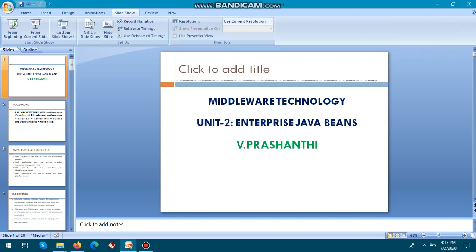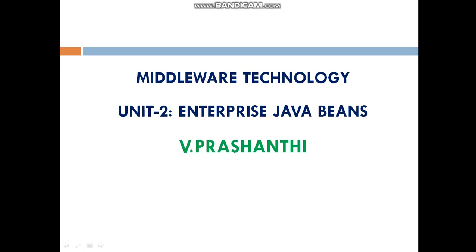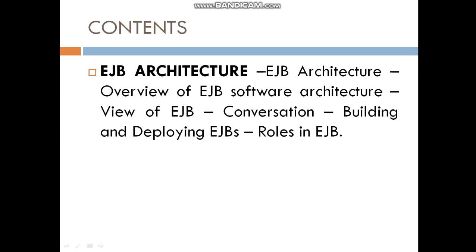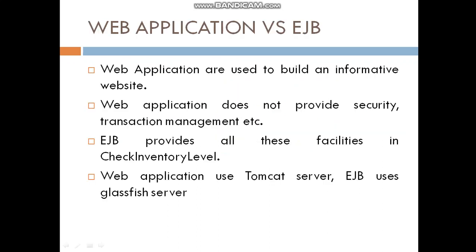Good morning, this is Prasanthi here to continue with the Middleware Technologies subject. In the last videos we discussed Unit 1 — what is middleware technologies. Unit 2 covers Enterprise Java Beans. The contents we will discuss in Unit 2 are: EJB architecture, overview of EJB, software architecture view of EJB, conversation, building and deploying EJBs, and roles in EJB.